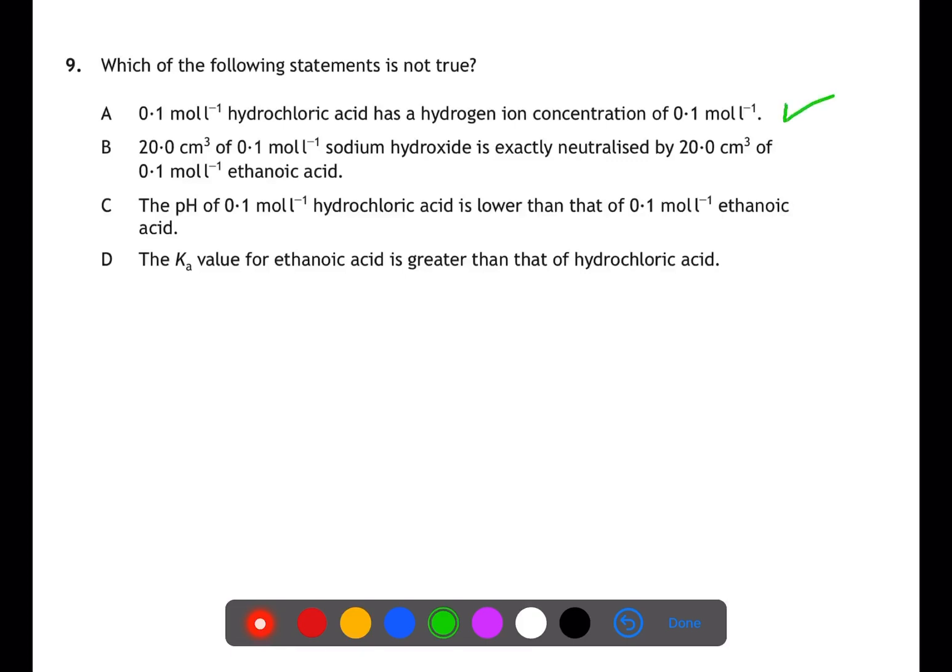B will be true as sodium hydroxide is a monoprotic base and ethanoic acid is a monoprotic acid. Therefore the moles of OH ions and the moles of H+ ions are the same in 20 mils of 0.1 molar solution of each. For C, the pH of hydrochloric acid at 0.1 molar will be lower than that of 0.1 molar ethanoic acid. This is because hydrochloric acid is a strong acid and ethanoic acid is a weak acid. Therefore hydrochloric acid will have dissociated more than ethanoic acid will. The pH is then a measure of the H+ ions in solution.